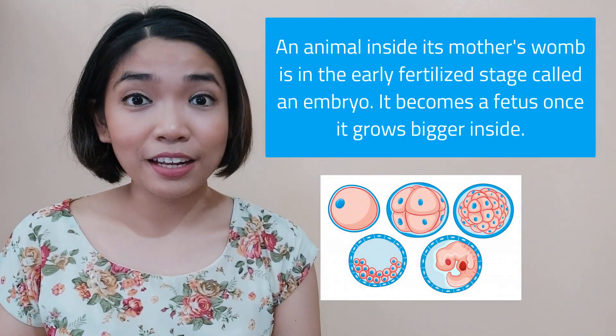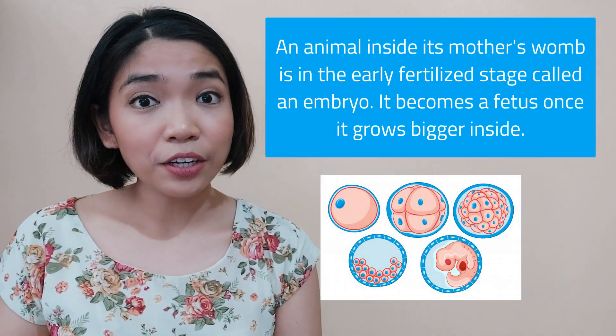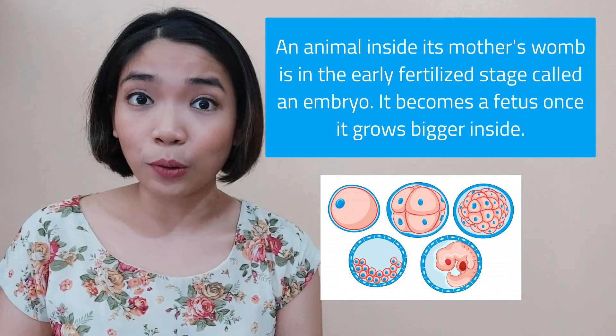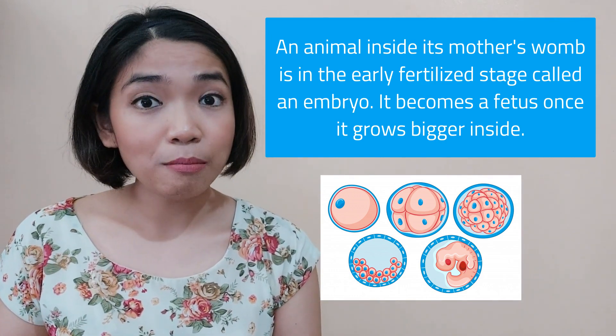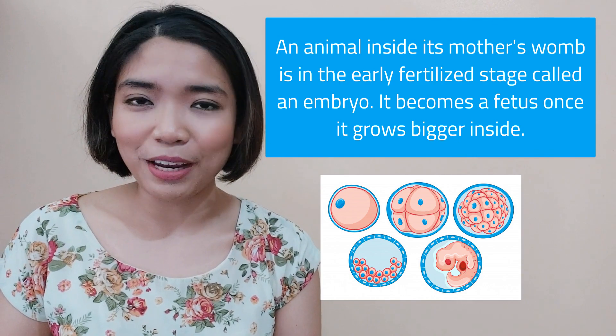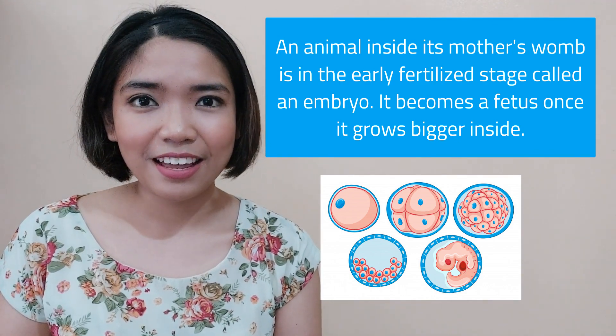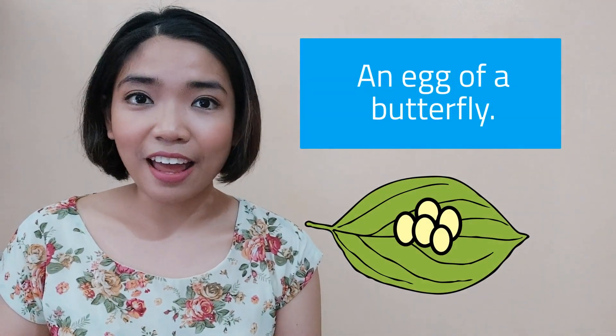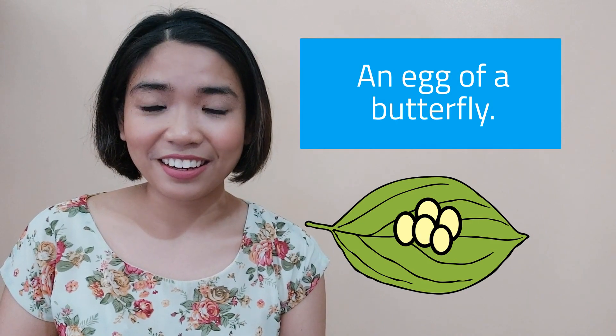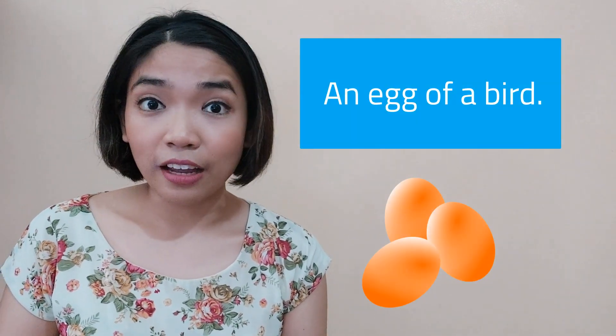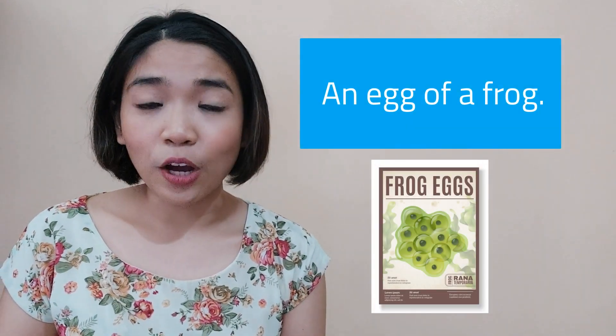Here are some examples of living organisms in the fertilized egg stage. First, an animal inside its mother's womb is in the early fertilized stage called an embryo. It becomes a fetus once it grows bigger inside. Second, an egg of a butterfly. Third, an egg of a bird. And fourth, an egg of a frog.